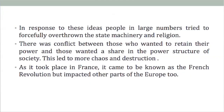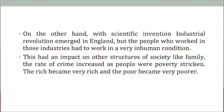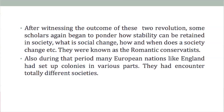In response to these ideas, people in large numbers tried to forcefully overthrow the state machinery and religion. There was a conflict between those who wanted to retain their power and those who wanted a share in that power structure of society, leading to more chaos and destruction. This took place in France and came to be known as the French Revolution, but it had an impact over all other parts of Europe. On the other hand, with scientific invention, the Industrial Revolution emerged in England. But the people who worked in those industries had to work in very inhuman conditions, which impacted other structures of society like family. The rate of crime increased as the people were poverty-stricken, and the rich became richer while the poor became poorer.